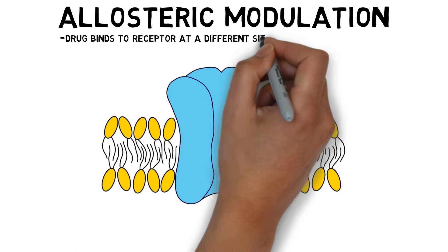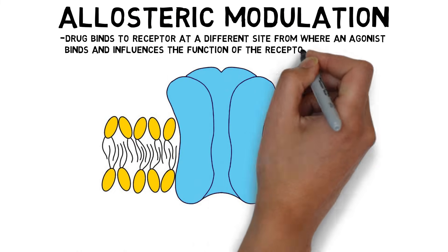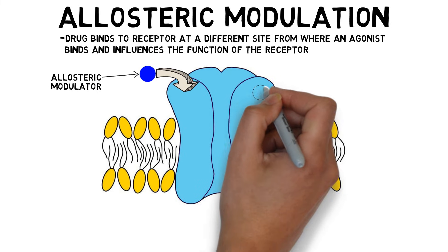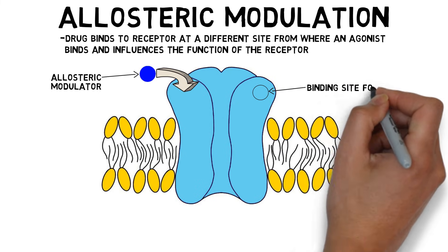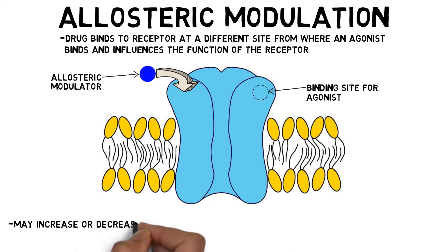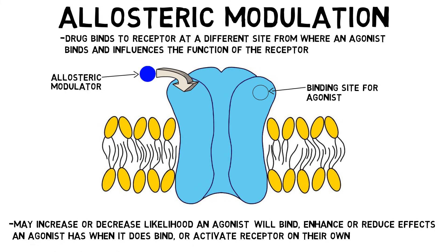Some drugs may bind to a receptor at a different site from where an agonist binds, and influence the function of the receptor. These drugs, often called allosteric modulators, may increase or decrease the likelihood of an agonist binding to a receptor, enhance or reduce the effects an agonist has when it does bind, or activate the receptor on their own.